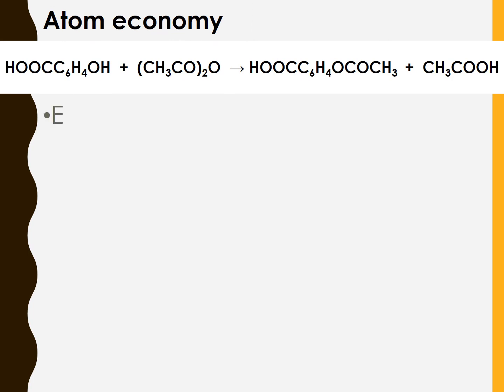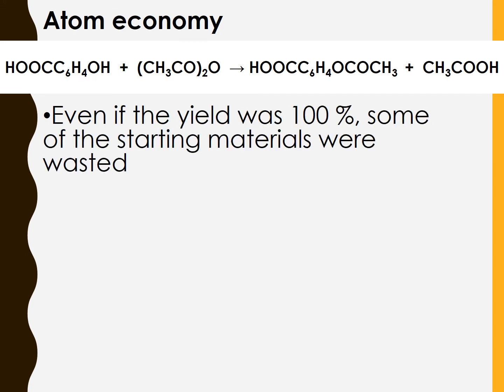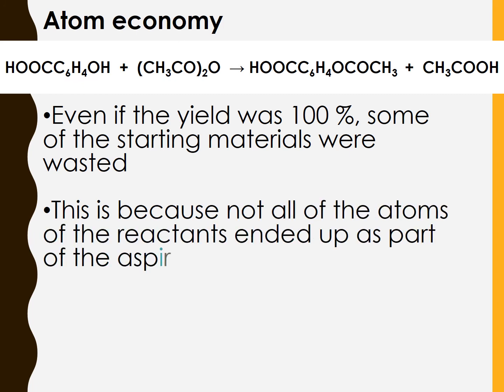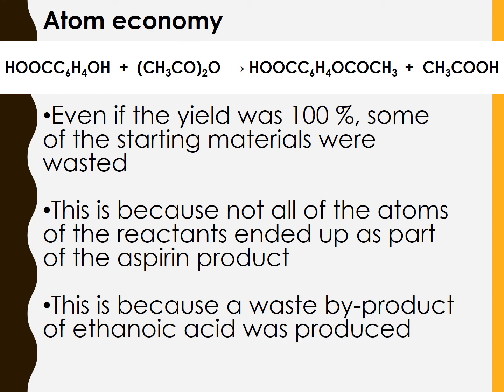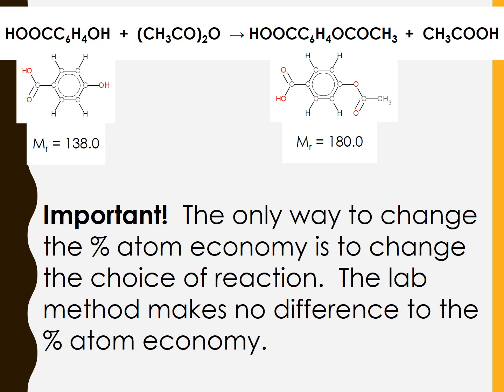In terms of percentage atom economy then, even if the yield was 100%, some of the starting materials were wasted. This is because not all of the atoms end up as part of the aspirin product, and it was just the aspirin product in this example that we were interested in. Because a waste byproduct of ethanoic acid is produced, the atom economy is always going to be lower than 100%.